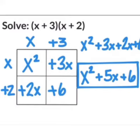Here we will learn about multiplication of polynomials (x + 3) with (x + 2) using the box method. Dear students, give your attention to the screen. Row-wise we have (x + 3), column-wise we have (x + 2). First, we will multiply x with x, and we will get x².